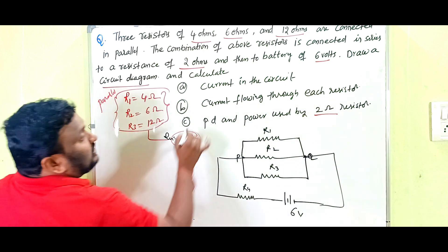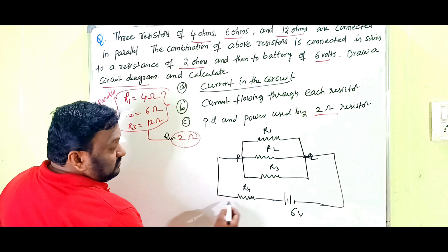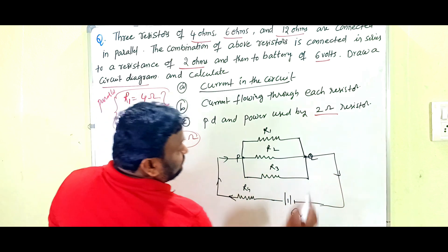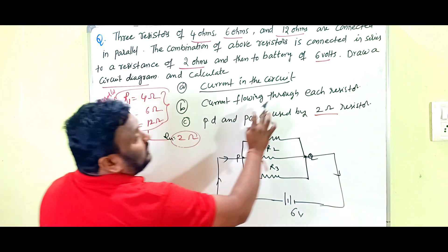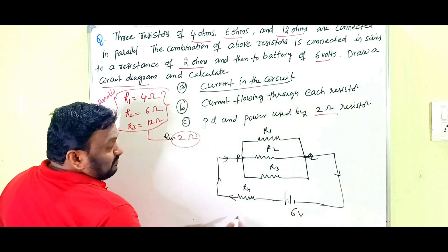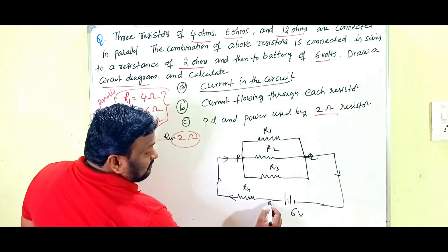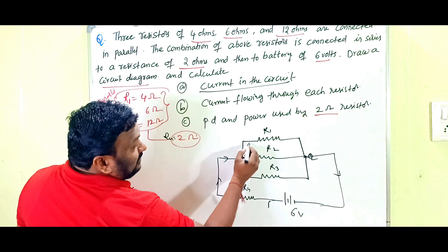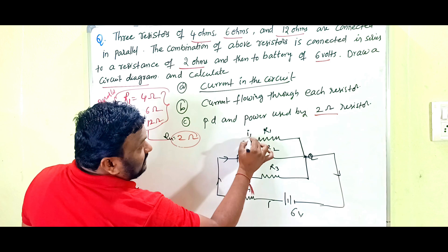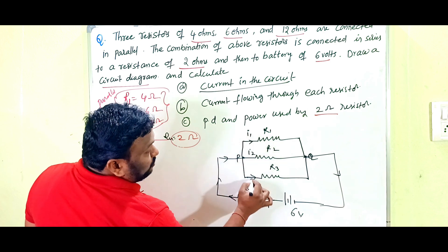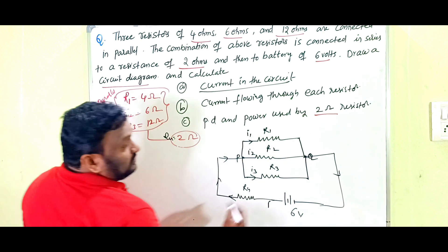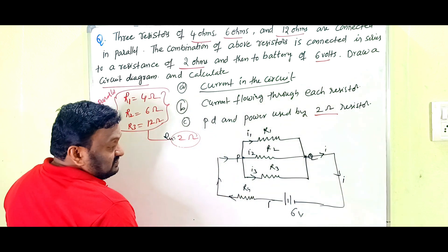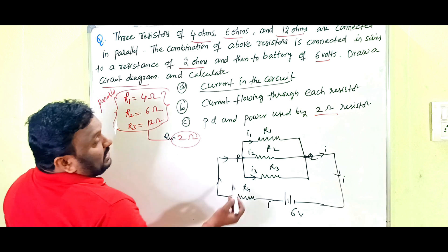Now, what we have to find out: the current in the circuit — that is, the amount of current supplied by the battery. The current I supplied by the battery splits into three parts: I1, I2, and I3 through the parallel resistors, and then recombines as I at the other end.